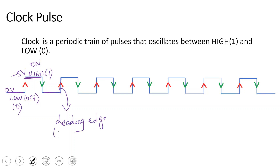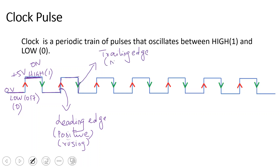You can also say positive edge, or rising edge. So when you transition from low level to high level, that is the leading edge, positive edge, or rising edge. And when the high state transitions to low — that is the falling edge, also called the trailing edge or negative edge. So both names are used.